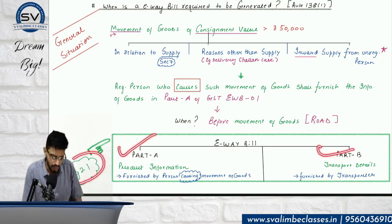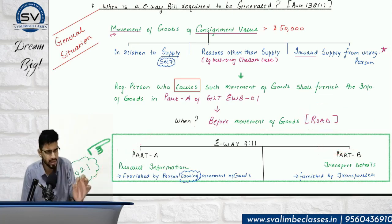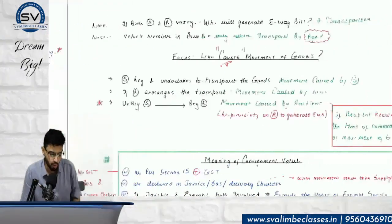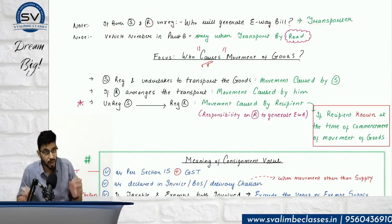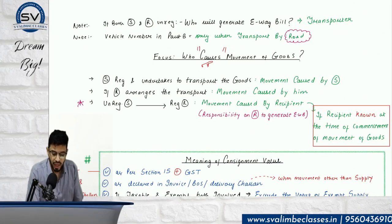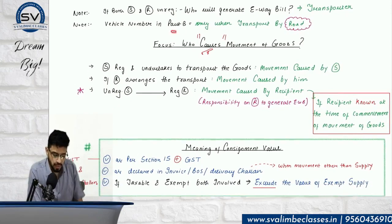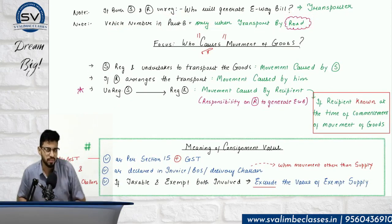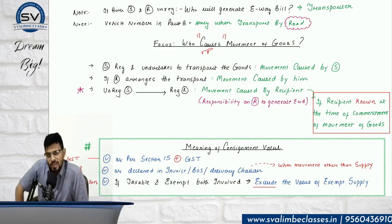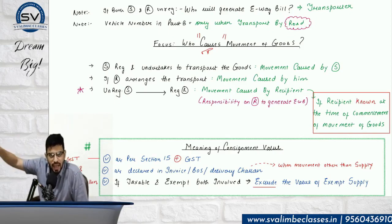Part A and Part B details are on page 21 of ICSI material — not very important from a revision point of view. Important note: if both supplier and recipient are unregistered, the transporter will generate the e-way bill. If the transporter does not have a GSTN, they must obtain the TRANSID. Vehicle number in Part B is mandatory only when transport is by road. For vessel or aircraft there is no vehicle number — ship and aircraft don't have registration numbers like a truck.